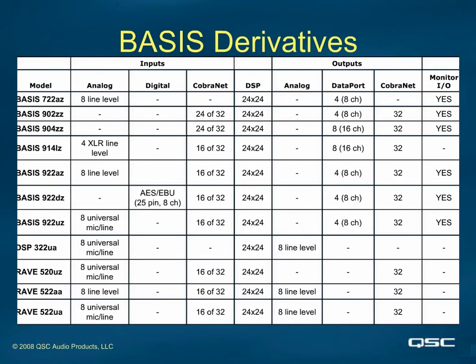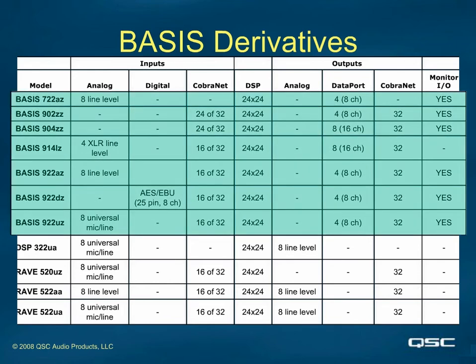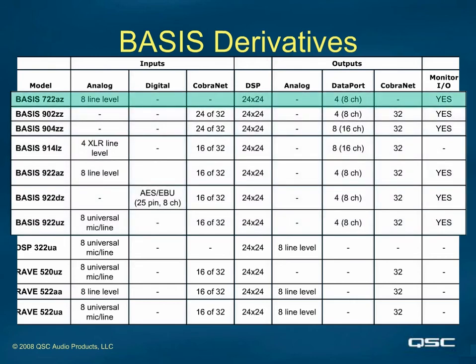Here we see a chart showing all 11 basis derivative models we currently ship. They are called derivatives because they were all derived from the same design platform of the basis. They are grouped by model series. The top seven are specifically called basis because they have data ports for their outputs. One basis model in particular, the 722AZ, does not have CobraNet — the only way to get a 7 for this series is to add 4 plus 3, so it doesn't include a 2 for CobraNet.